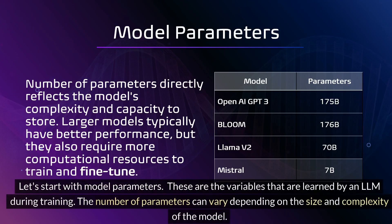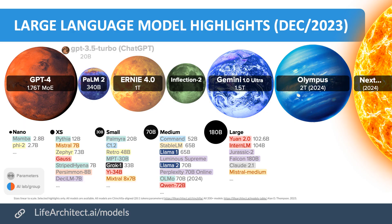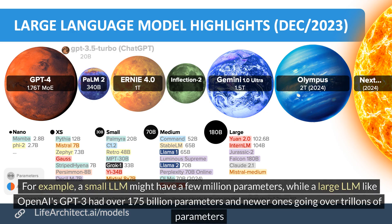Let's start with model parameters. These are the variables that are learned by an LLM during training. The number of parameters can vary depending on the size and complexity of the model. For example, a small LLM might have a few million parameters, while a large LLM like OpenAI's GPT-3 had over 175 billion parameters, and newer ones going over trillions of parameters.